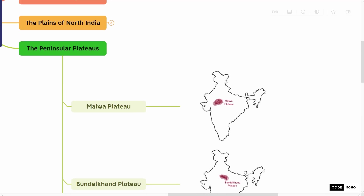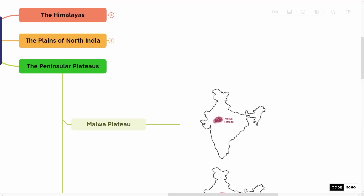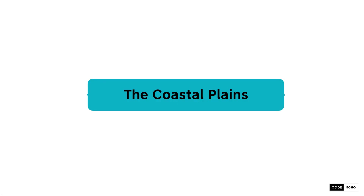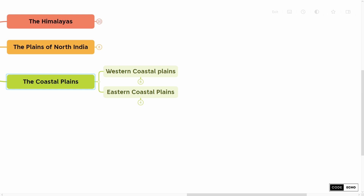Now let us move on to another Physiographic Division, that is the Coastal Plains. The Coastal Plains has two subdivisions in it. The first one is Western Coastal Plain, and the second one is Eastern Coastal Plain. The Western Coastal Plain is subdivided into three regions.